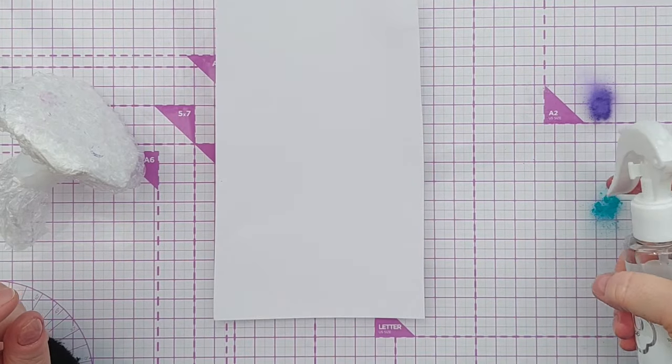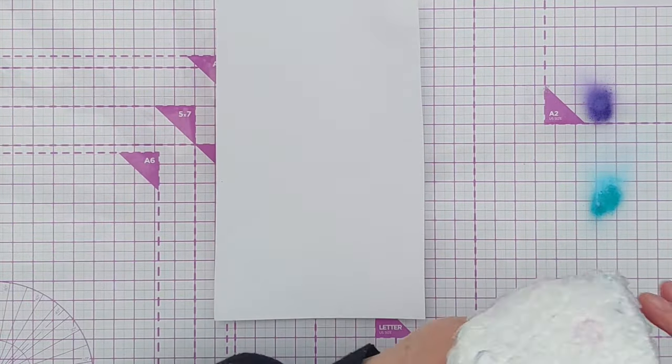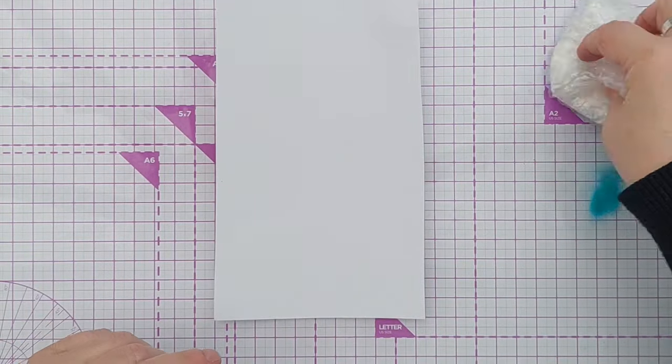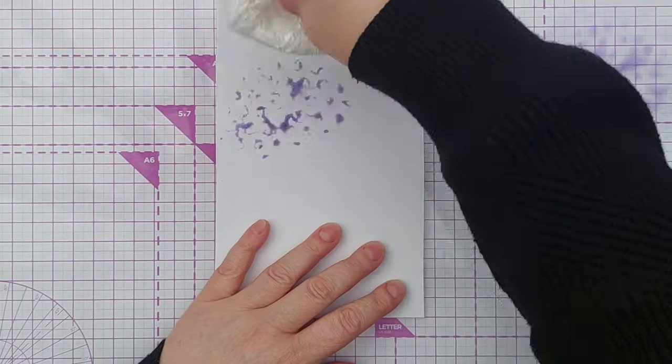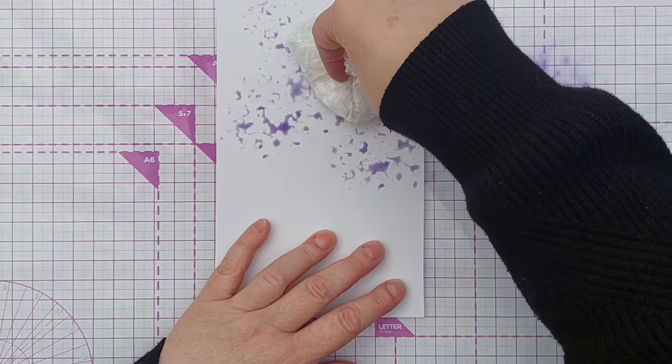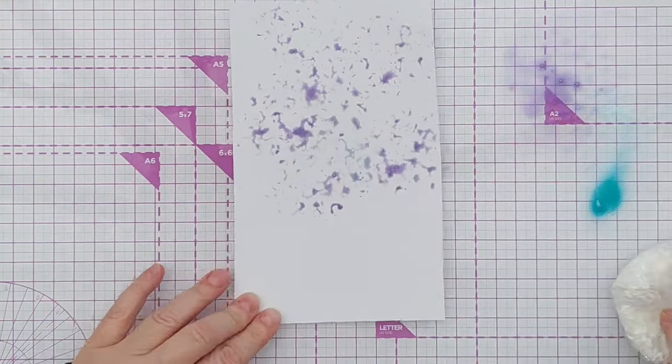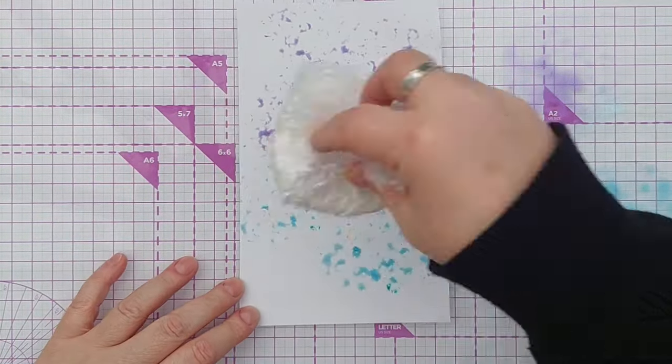So I'm going to use the luscious powders again, add some water to make the paints and I'm going to pick up the paint with my smusher and just smush it on.